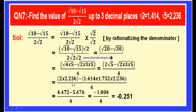So: 2 into root 5 is 2 into 2.236, minus root 2 (1.414) into root 3 (1.732) into root 5 (2.236), all divided by 4. 2 into 2.236 is 4.472. The product of 1.414 into 1.732 into 2.236, corrected to 3 decimal places, is 5.476. Therefore, 4.472 minus 5.476 is minus 1.004 divided by 4, giving minus 0.251. This is the answer up to 3 decimal places.